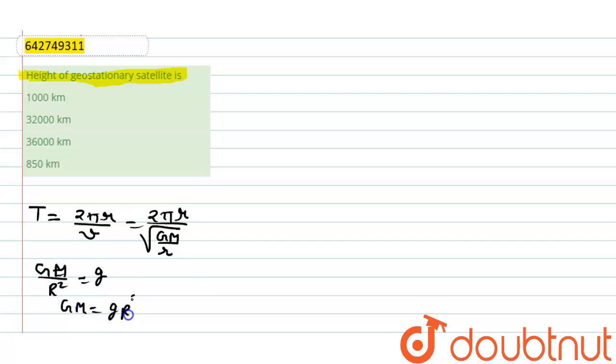We can say that time period will become 2 pi r divided by root g r square divided by r.